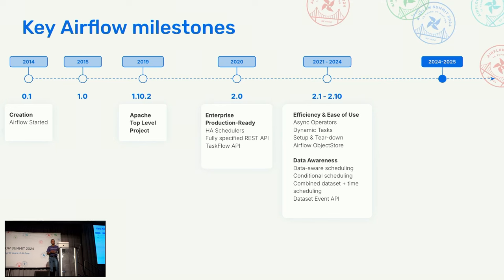Since then, we've had 10 feature releases in core Airflow over the last three years, primarily focused on one of two things: making Airflow easier to use and more efficient to run, or on data awareness. We have taken pains as a community to make sure that these releases are backwards compatible and been very consistent and strict with our semantic versioning scheme, and I'm really pleased with the progress we've made to date.